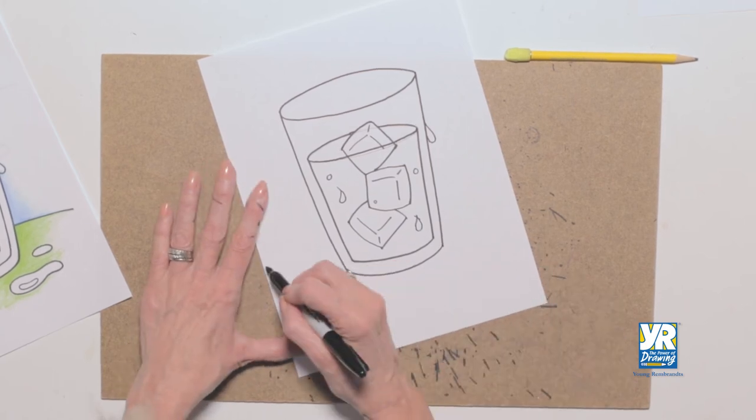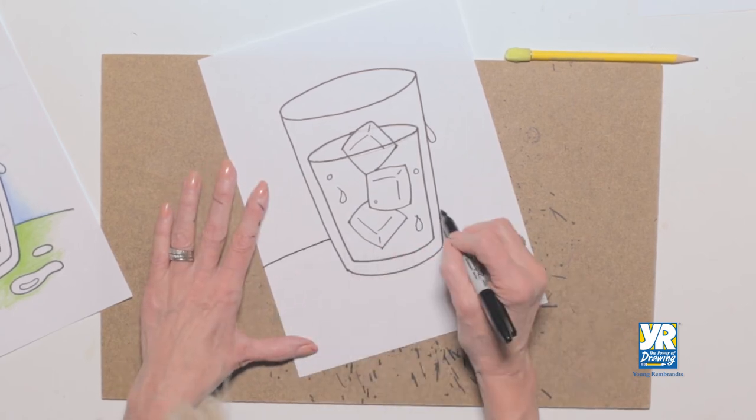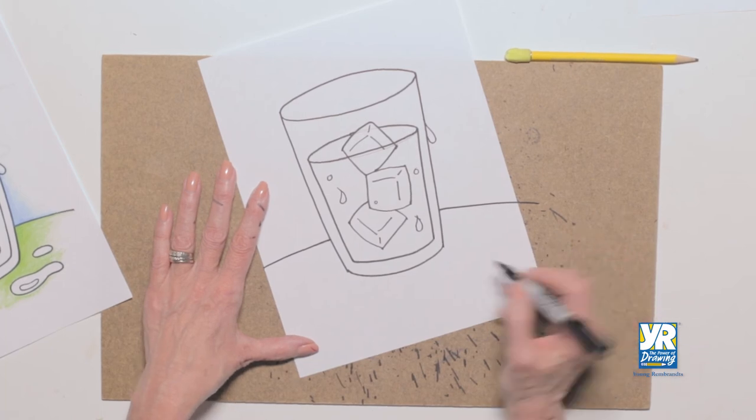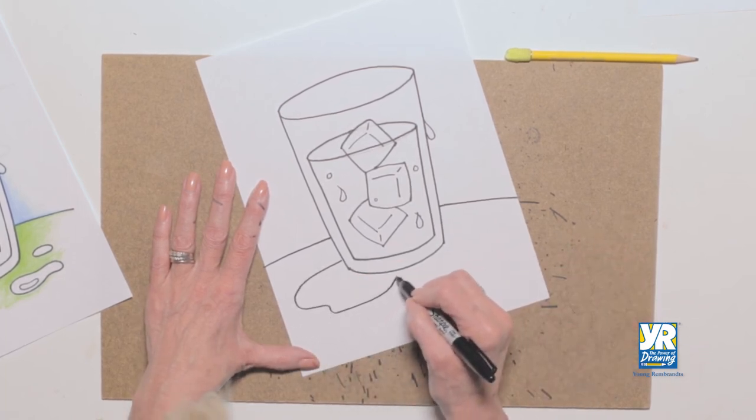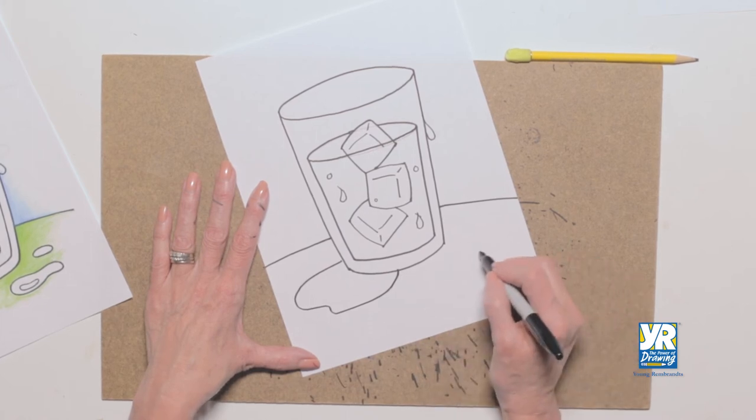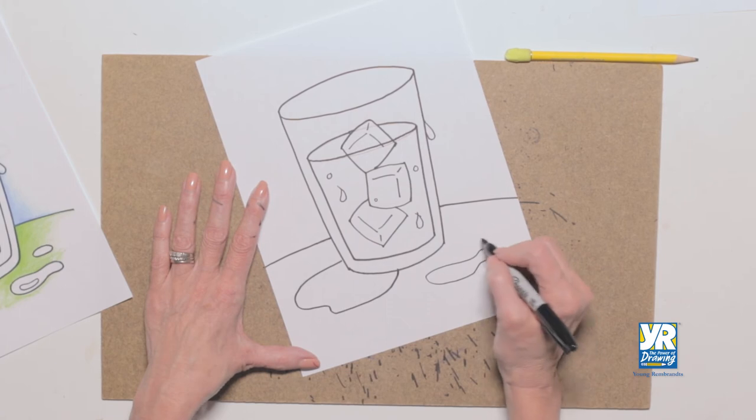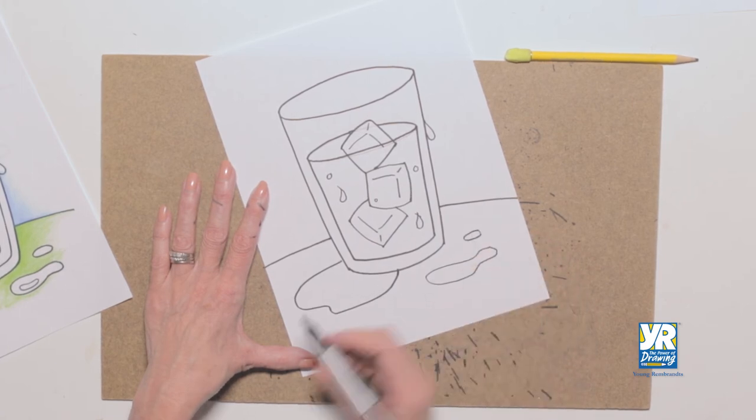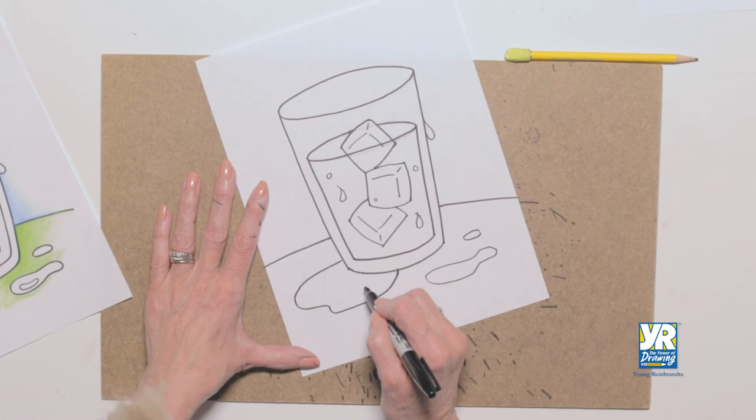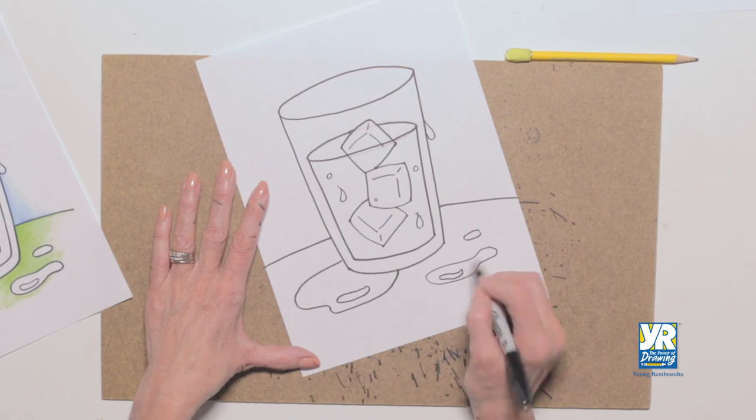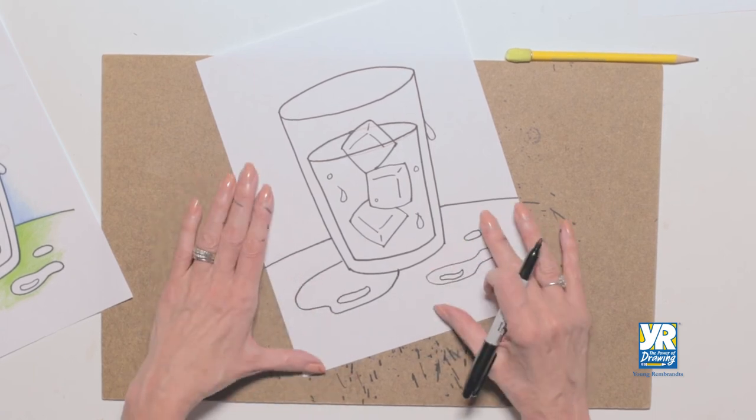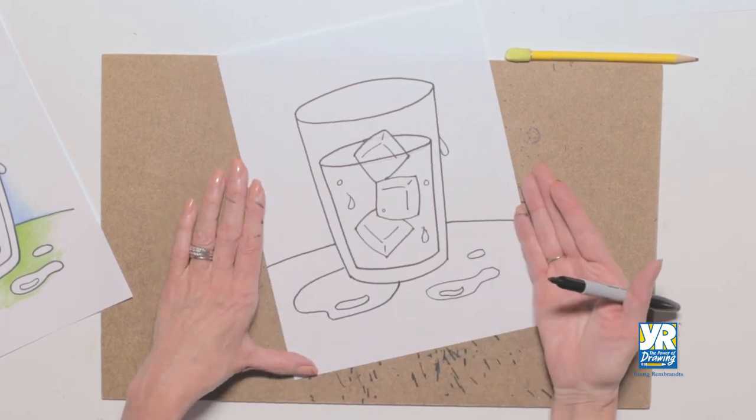So I'm gonna have a ground line. My glass has to be sitting somewhere. There we go. And let's get a couple of puddles on the ground or on the table because it's warm outside and it is melting. A couple little puddles. We have a little line. A little shape inside here. This is like a highlight, like that reflection that makes things look more three-dimensional. And there we have our glass of ice water.